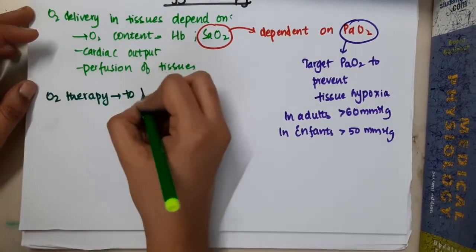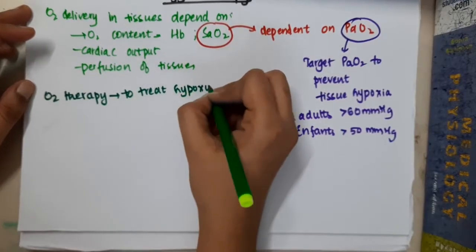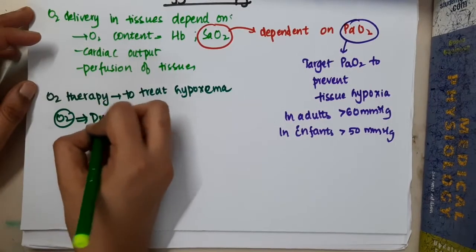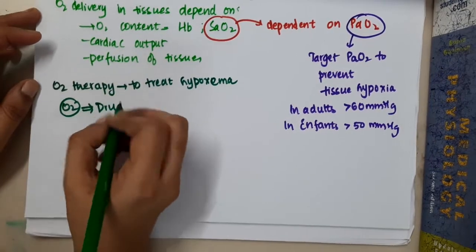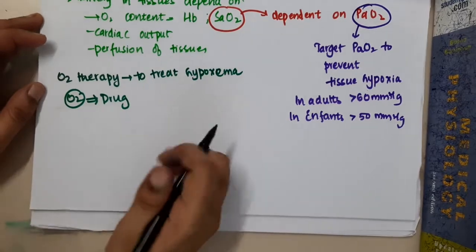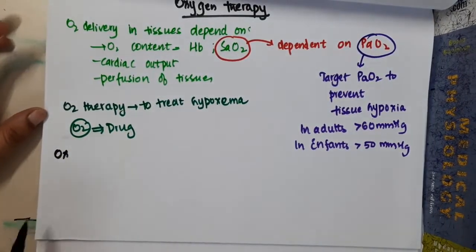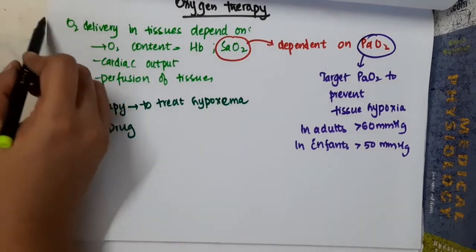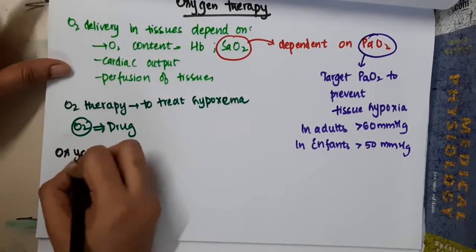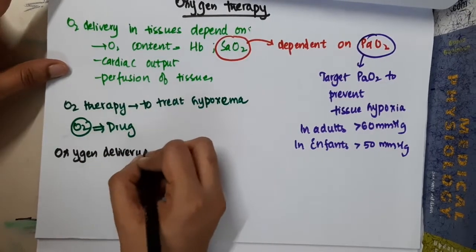Oxygen therapy is used to treat hypoxemia. Oxygen is actually a drug. Now let us learn some important points about oxygen delivery mechanisms — the oxygen delivery devices.